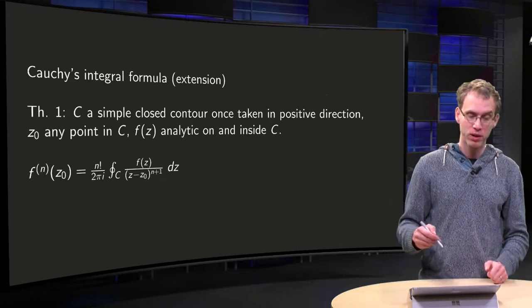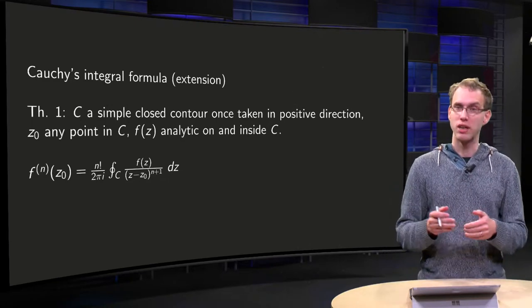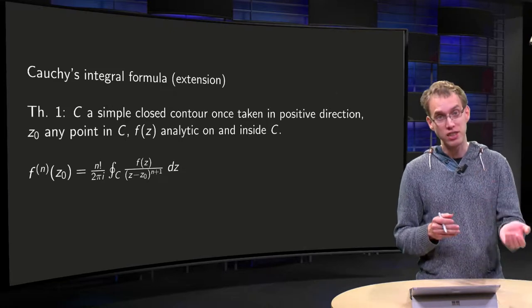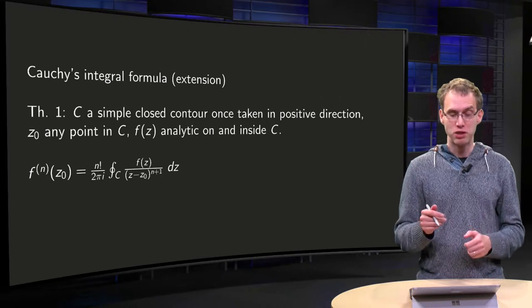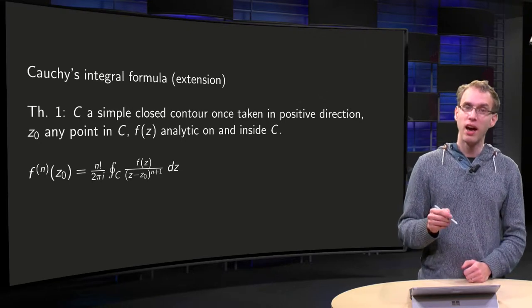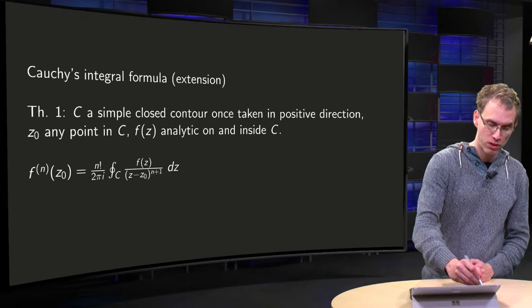So how does it work? Well again, C has to be a simple closed contour, taken once in a positive direction, and z0 has to be a point inside C, and f again has to be analytical inside C. And then our formula reads as follows.